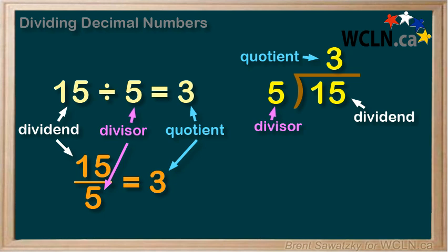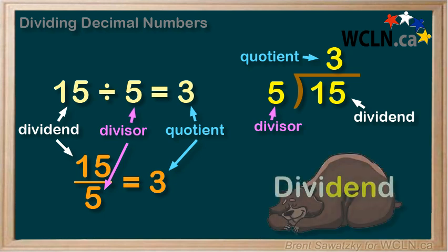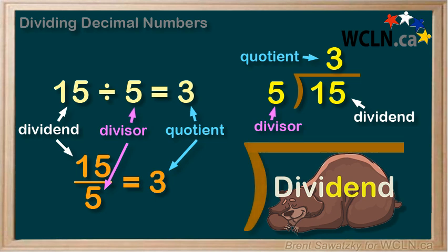Some students remember these terms easier by noticing that 'dividend' has 'den' in it, and our division sign looks a bit like a den. So we always place the dividend in the den, which leaves the divisor out front, and the quotient is always our answer.